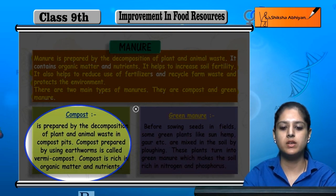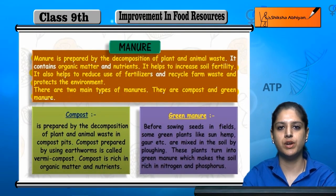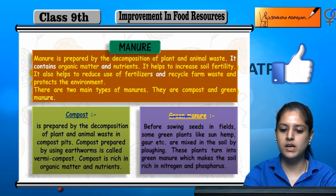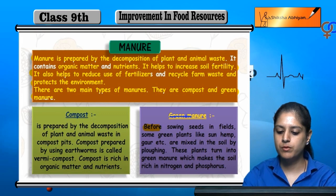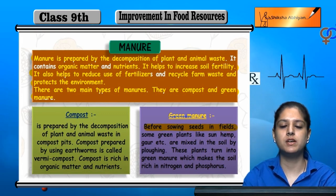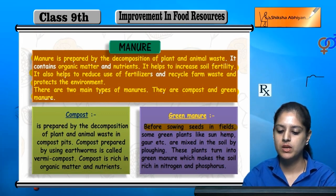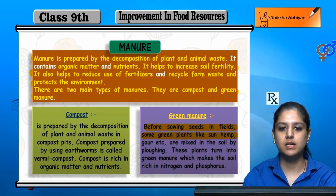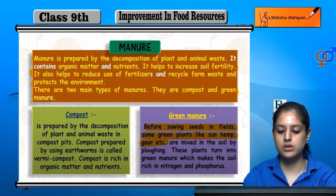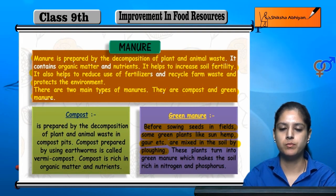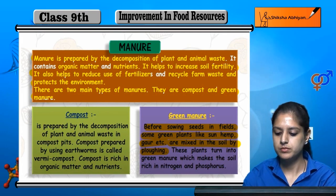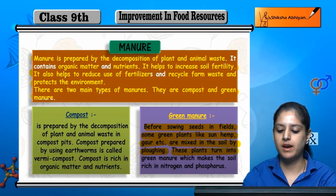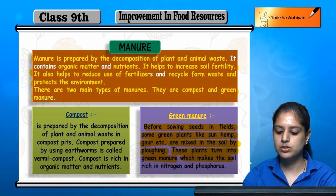Compost provides organic matter and nutrients to the soil. The second type is green manure. Before sowing seeds in fields, some green plants like sun hemp, guar, etc. are mixed into the soil by plowing. These green plants serve as green manure and enrich the soil with nitrogen and phosphorus.